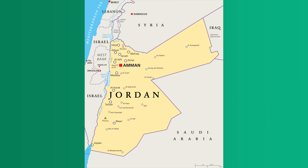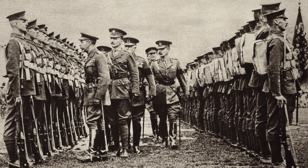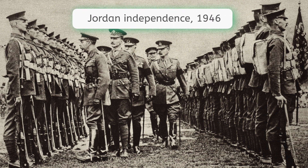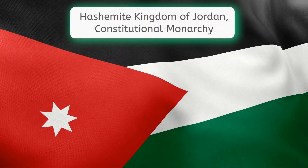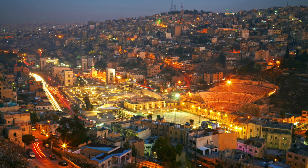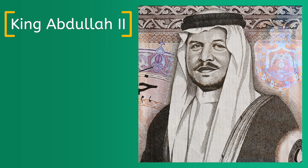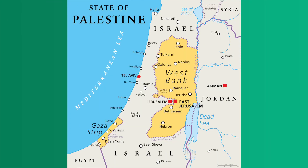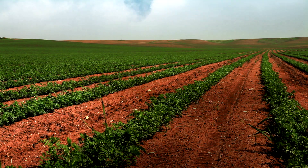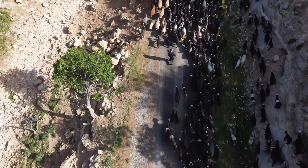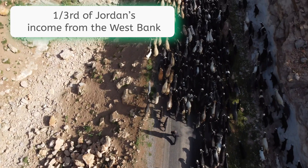Jordan was created as part of the British Mandate for Palestine after World War I and declared independence after World War II in 1946. Officially called the Hashemite Kingdom of Jordan, the country is a constitutional monarchy. While the legislative branch is elected, including the Prime Minister, the king — in this case, King Abdullah II — still has authority to sign or veto all laws. A 1948 conflict between Israel and other Arab states, including Jordan, resulted in Jordan annexing an area called the West Bank, a predominantly Palestinian-inhabited area. The West Bank was heavily cultivated for crops, including canals, irrigation, and areas for animal herders. Throughout the 1960s, one third of Jordan's income came from this area.